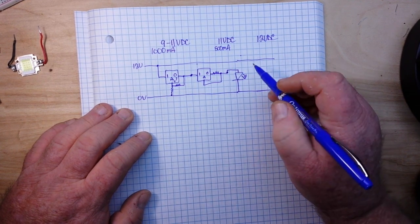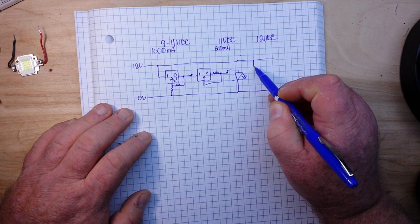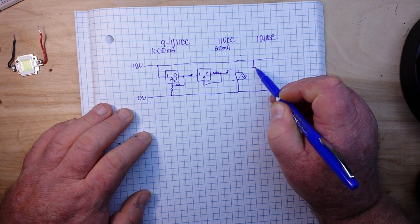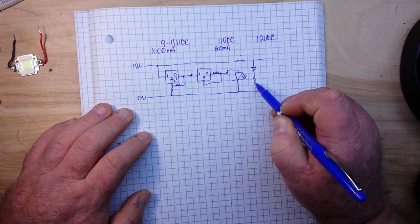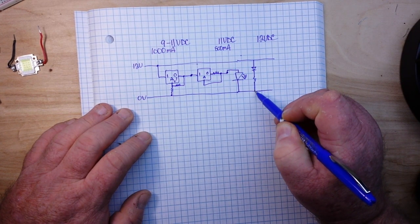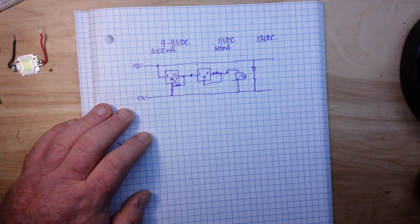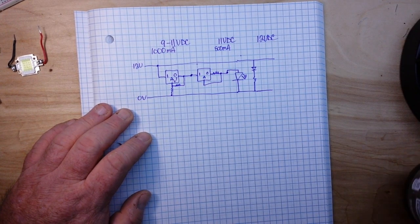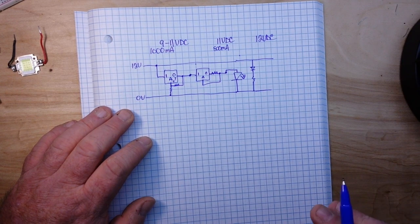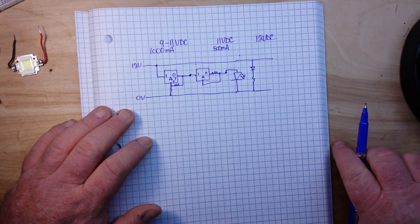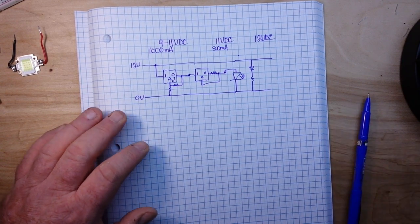And then we're also going to have our smaller indicator LED with a current limiting resistor going to ground. So the question is now, what are the values that we need for all of these? Well I'm going to show you a really easy way to figure that out.